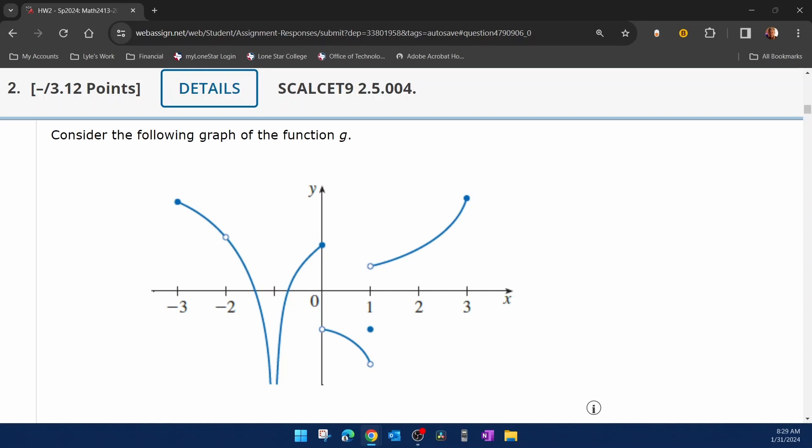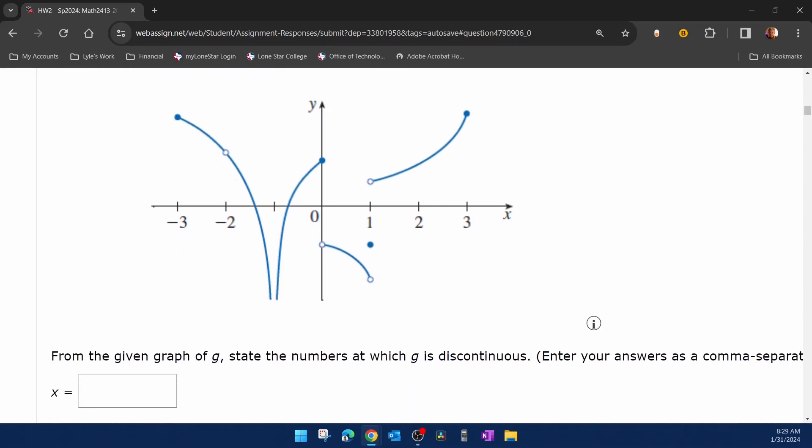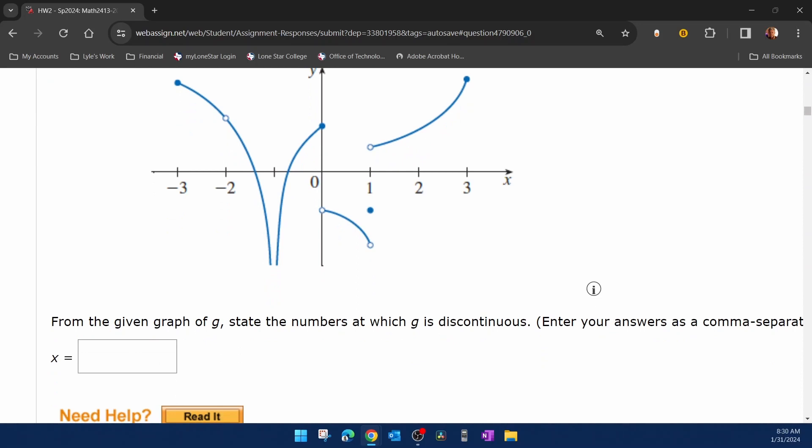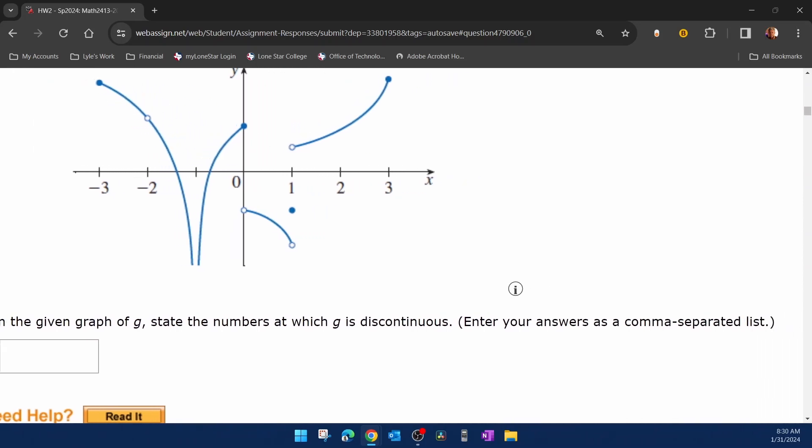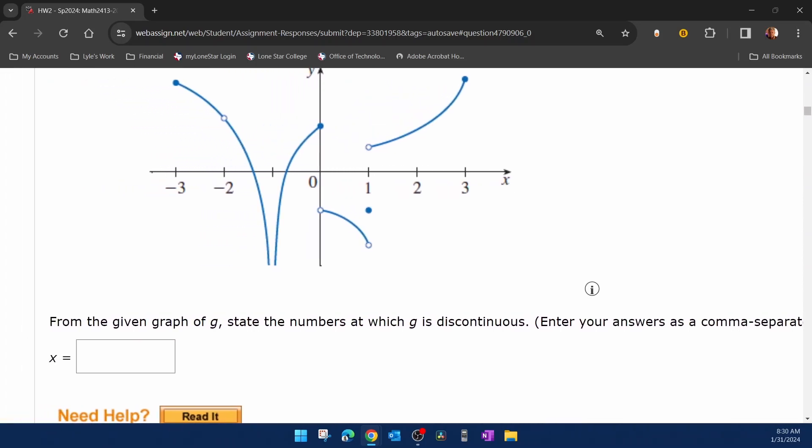The problem says, consider the following graph. And what do they want us to find? It says, from the given graph, state the numbers at which g is discontinuous. Enter your answers as a comma separated list.